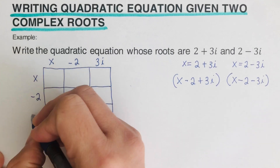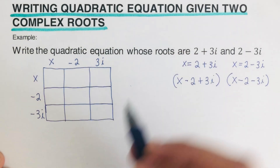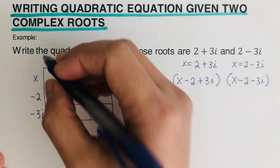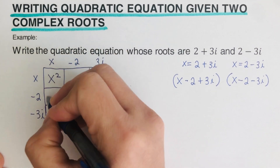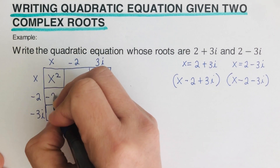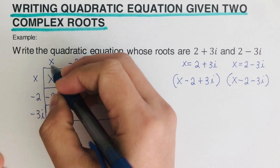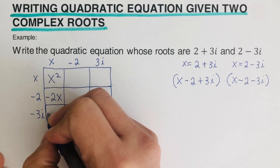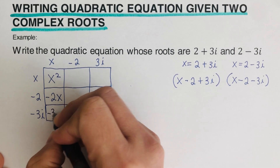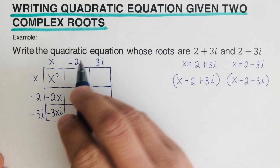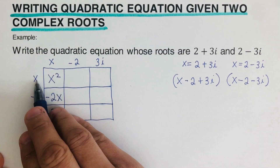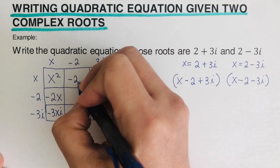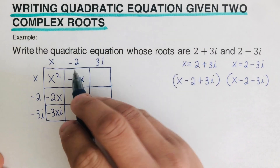Multiplying across: x times x is x squared; x times negative two is negative 2x; x times negative 3i is negative 3xi. Then negative two times x is negative 2x.